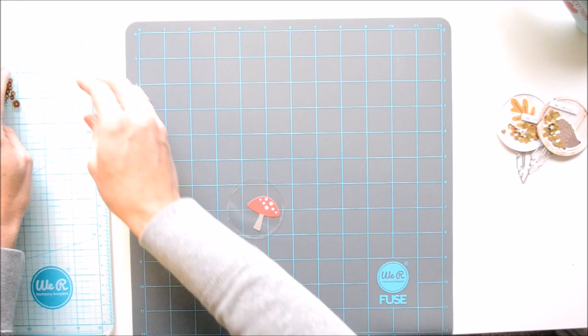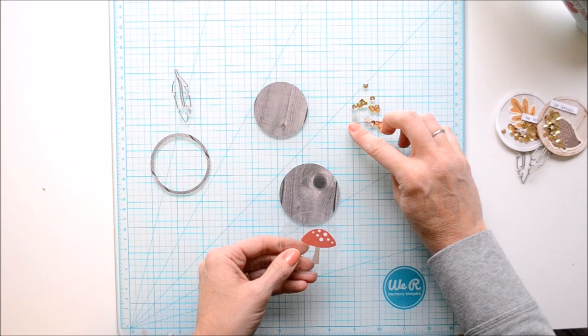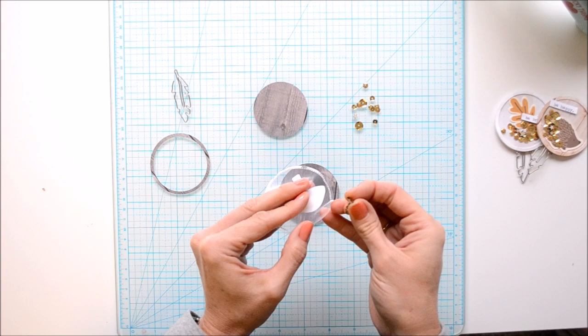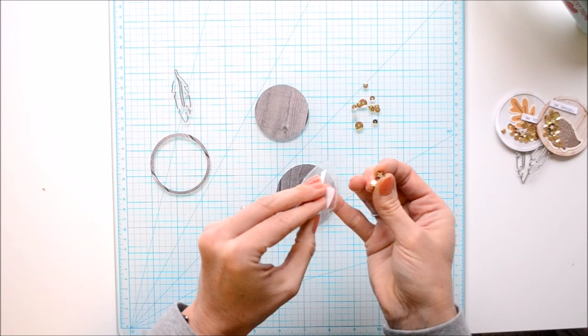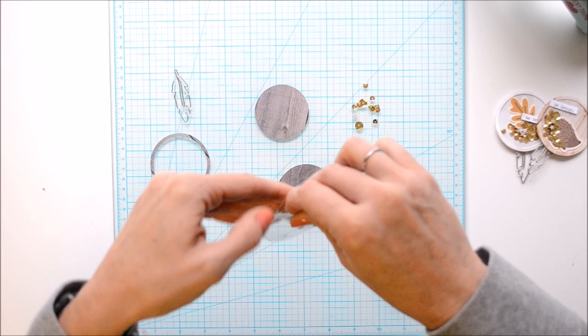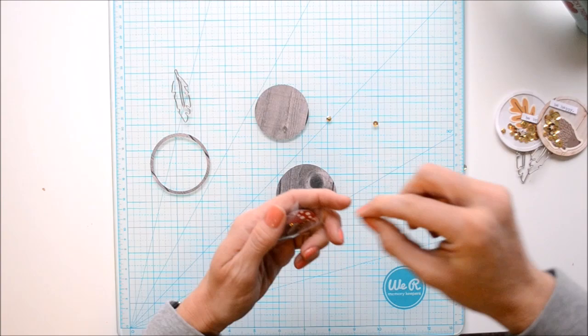Now I'm going to add my little shaker bits. I've got some gold sequins and a few little wood veneer tiny stars, and I'm just going to slide those in. I want them to be in front of my mushroom. We're going to open up the pocket there and kind of hold that mushroom to the top and slide my shaker bits inside. I'm just going to slide these right in front of the mushroom.